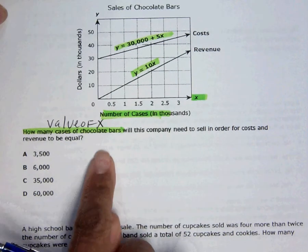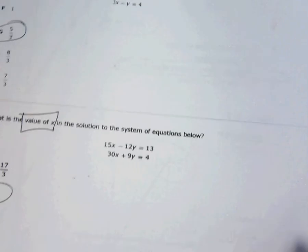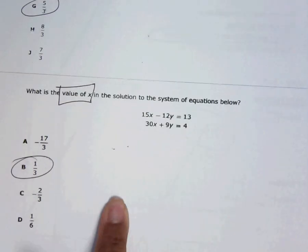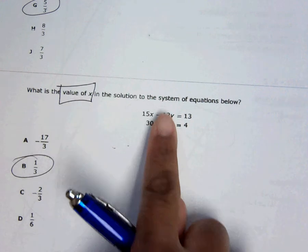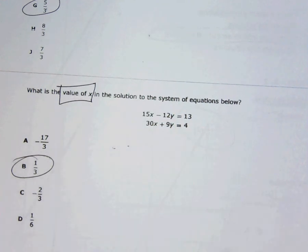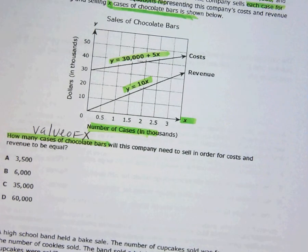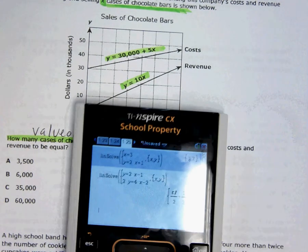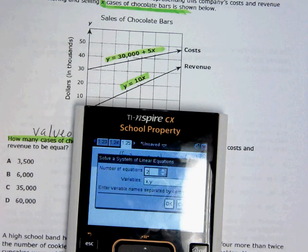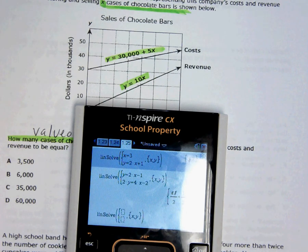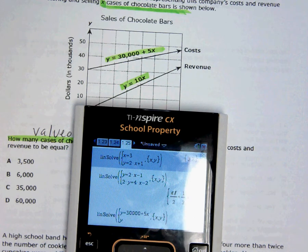Did you realize that this word problem is the same problem? What is the value of X given the system of linear equations? It is, it's just a word problem form. So don't miss this. So menu 3, 2, and enter. Y equals 30,000 plus 5X. And I really shouldn't do this considering I did the other ones, but I'm going to do it because the numbers are so good and it's a word problem.